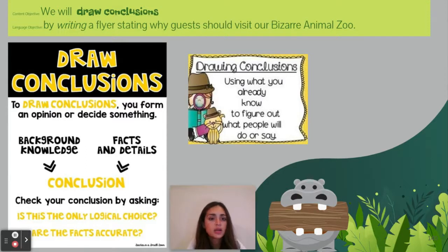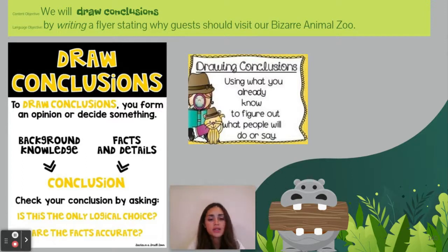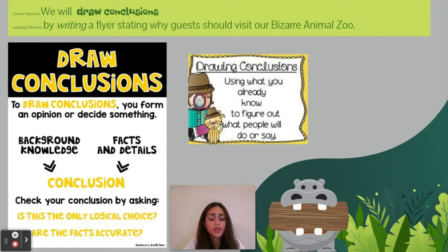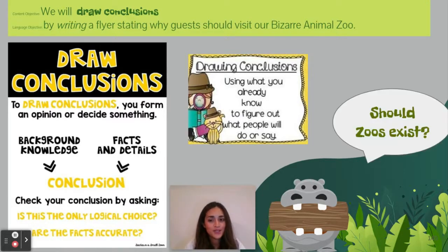Today you're going to draw conclusions to form an opinion and decide something. You're going to use your background knowledge, some of the facts and details you've already learned in Bizarre Animals, and come up with a new conclusion. You're going to check your conclusion by asking: Is this a logical choice? Are my facts accurate? Remember to use what you already know to figure out what people will do or say. Today you're going to draw conclusions on: Should zoos exist?